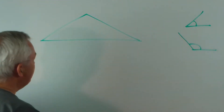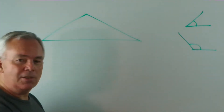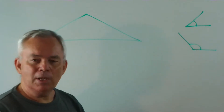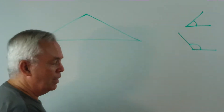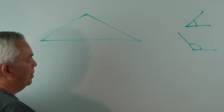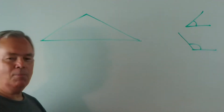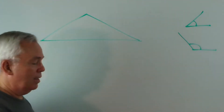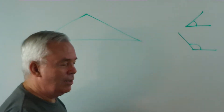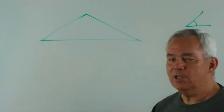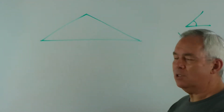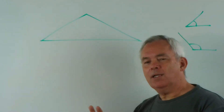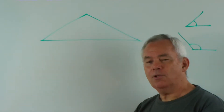And here's the challenge: just using straight lines, I want you to divide this obtuse angle triangle into acute angle triangles. I'll even be a bit more generous and say that it can be done with seven acute angle triangles. So stop the video, draw your triangle, and see if you can divide it up into seven acute angle triangles. I'll wait.